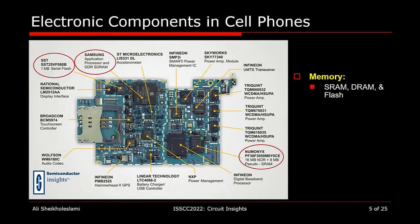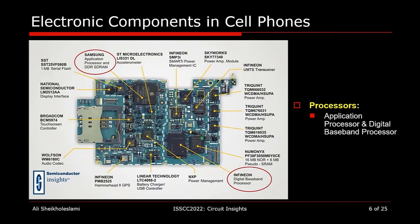You may have heard Jared Zerbe from Apple earlier today talking about the iPhone and the electronics it includes. I would like to use this image taken from the web that shows the electronic components in an older version of the iPhone. There are many microchips inside the iPhone, but what I have highlighted here are the memory chips — there are SRAM, DRAM, and flash memories.